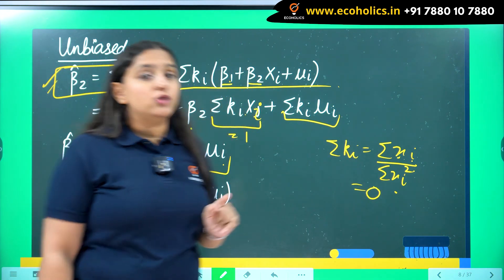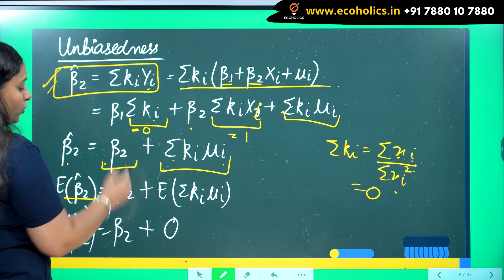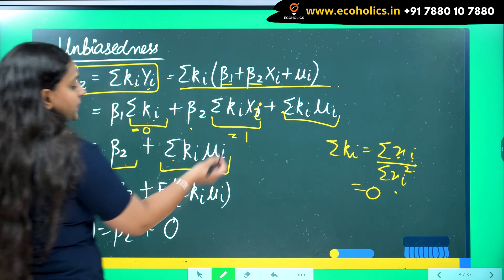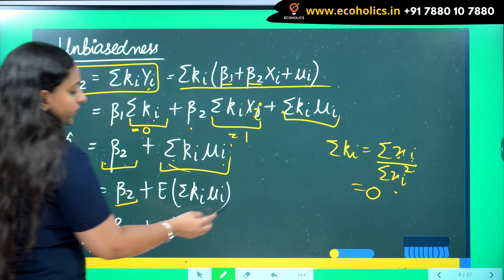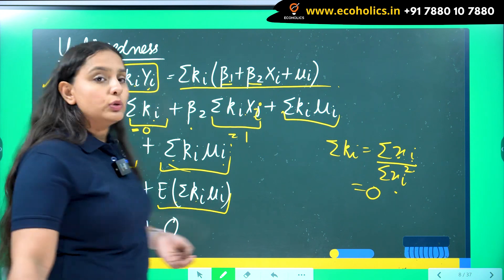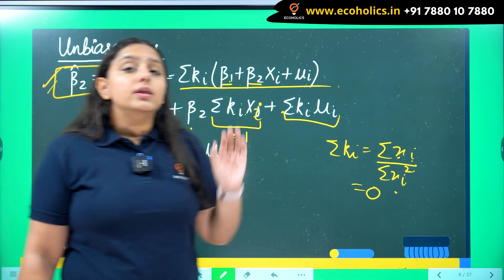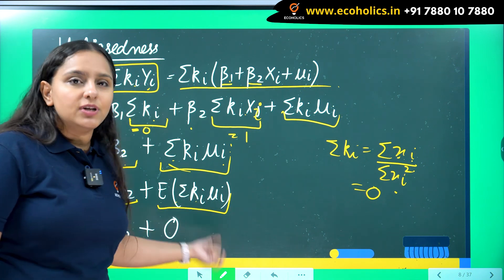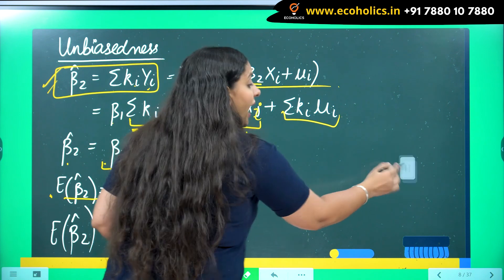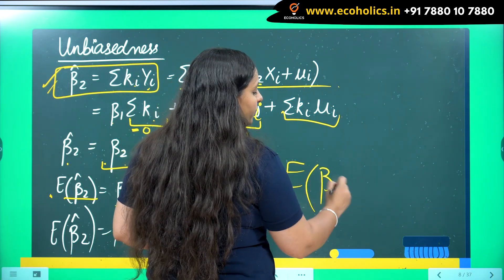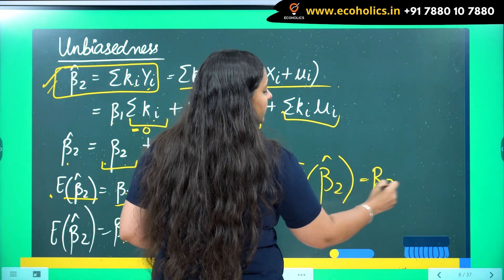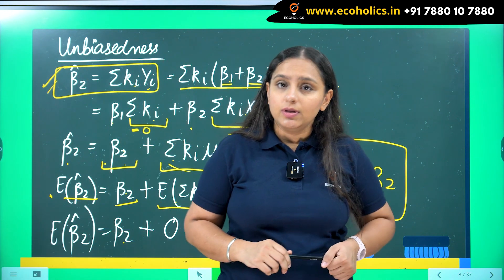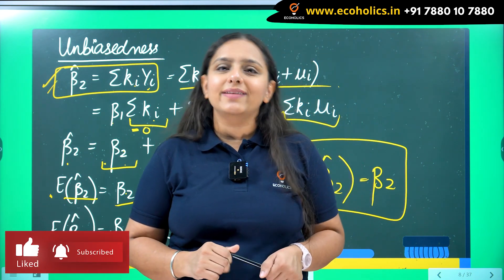To show unbiasedness we prove the expected value of the estimator equals the true value. Taking expectations: E(β̂₂) = β₂ + E(summation ki·μi). Since μi is a random error term, its expected value is always zero, and ki is just a weight, so E(summation ki·μi) = 0. Therefore E(β̂₂) = β₂, proving β̂₂ is unbiased. I hope you find this video useful — please like, share, and subscribe. Thank you for watching.